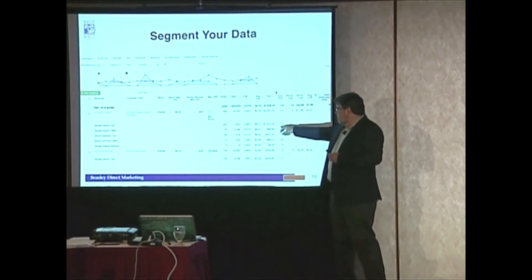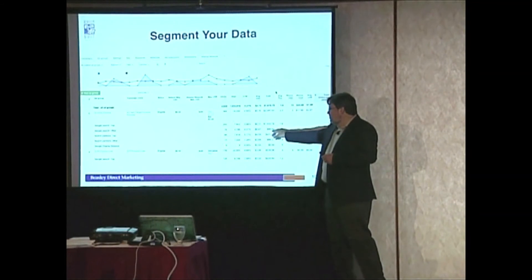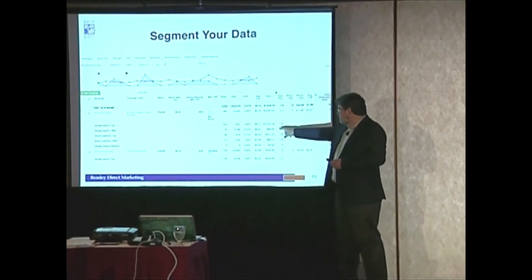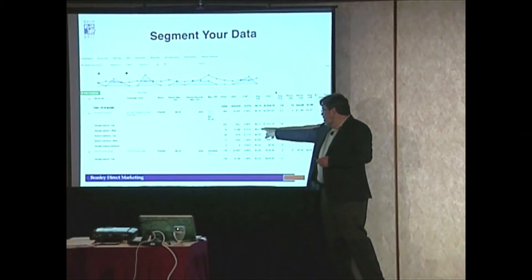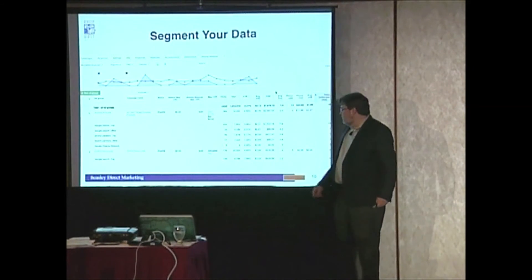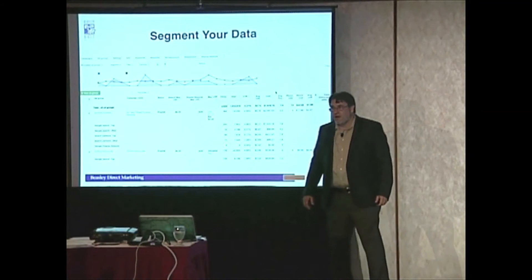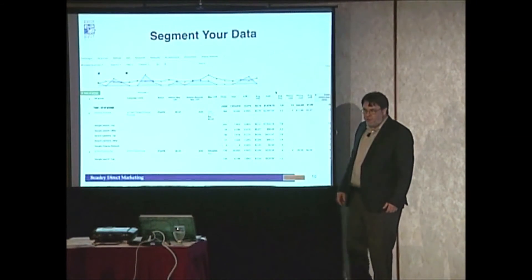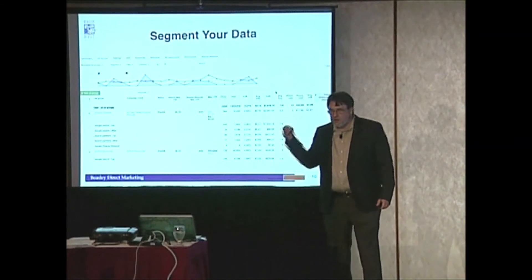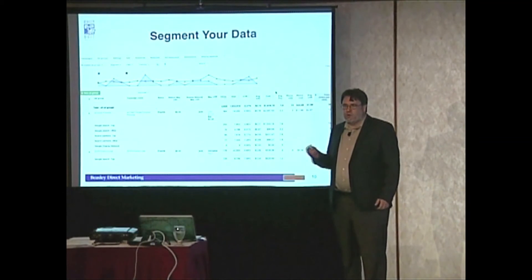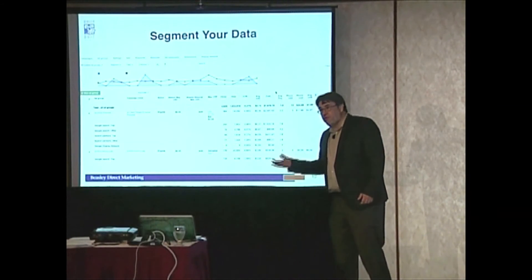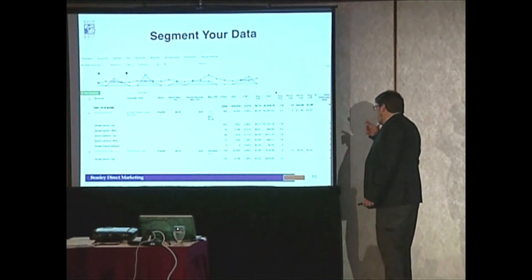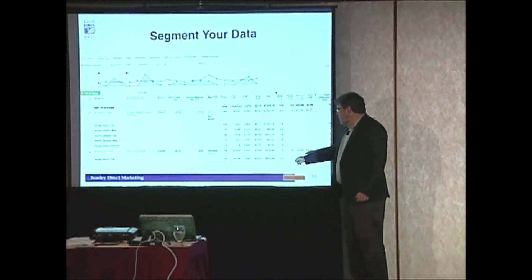When we looked at top position versus three-through-six position, our cost per click for lower positions was actually higher. Our click-through rate was 10% of the top position rate, and our conversion rate on those three-through-six positions was a quarter of the top positions. We were able to segment the data, analyze it, and we did the same thing on the search partners.